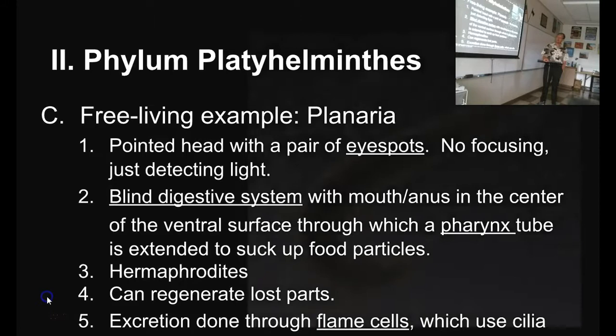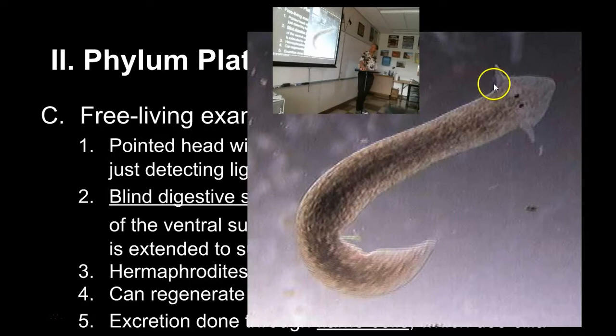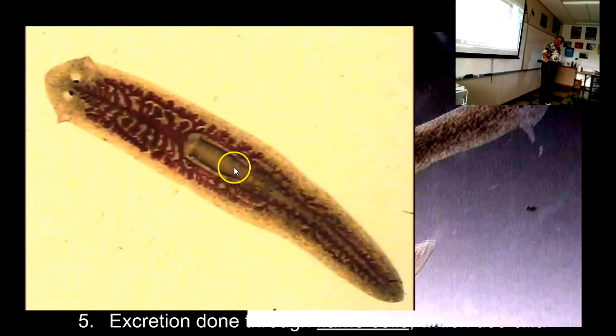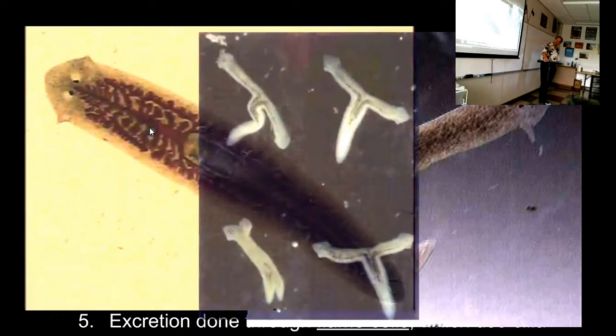This is what they look like — their head is kind of arrow-shaped. There's another one, and its mouth is right here in its belly. This is the pharynx — they will stick this tube out of their belly and suck up what they want to eat. And then the branching digestive system that goes throughout it, similar to a fluke.